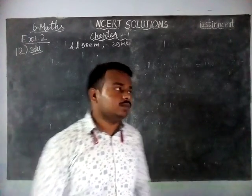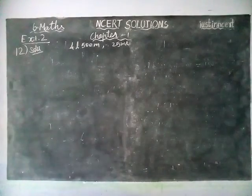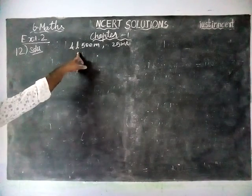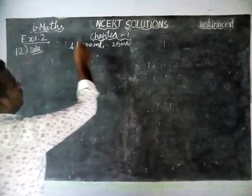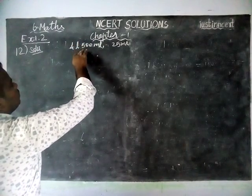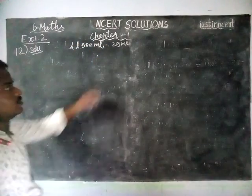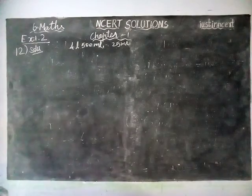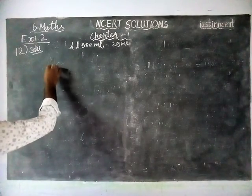In this, a vessel has 4 liter 500ml of curd, and they are going to convert and fill it in glasses which have 25 milliliter capacity. So curd in the vessel equals 4 liter 500ml, and the capacity of a glass is 25 milliliter.